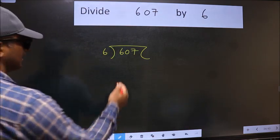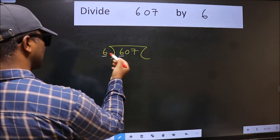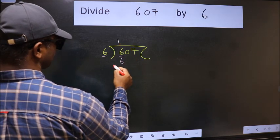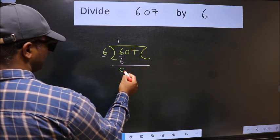Next. Here we have 6 and here also 6. When do we get 6 in 6 table? 6 once 6. Now we should subtract. We get 0.